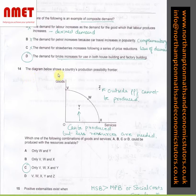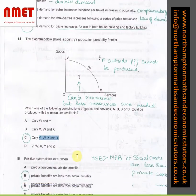In question number 14, the diagram below shows a country's production possibility frontier. I've said Z is outside of PPF, cannot be produced. Y can be produced, but less resources are needed. On the other hand, VWX are all on the PPF. The question is asking which one of the following combination of goods and services could be produced with the resources available, which would be all four points VWX and Y. Why? Because Y is inside the PPF and there will be some spare resources lying around in the economy.